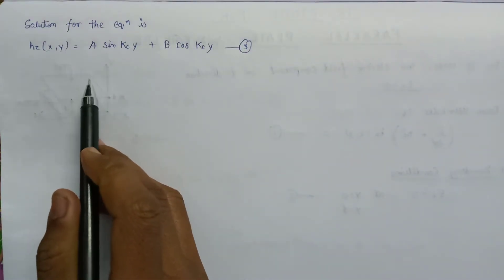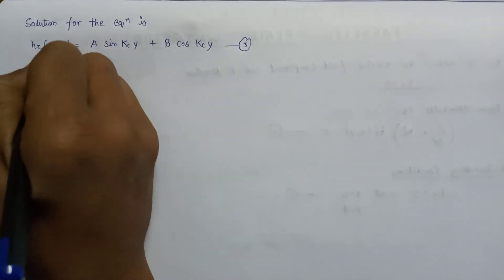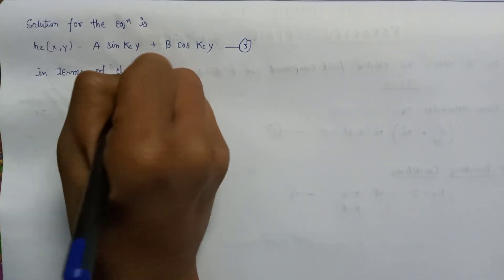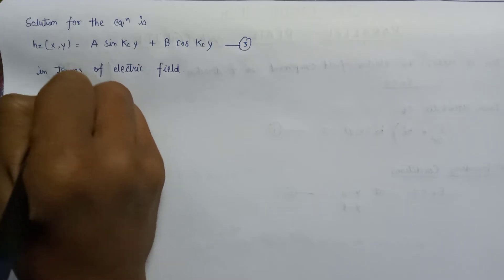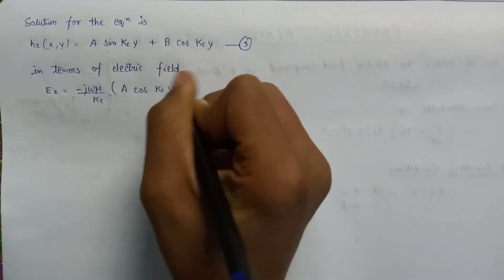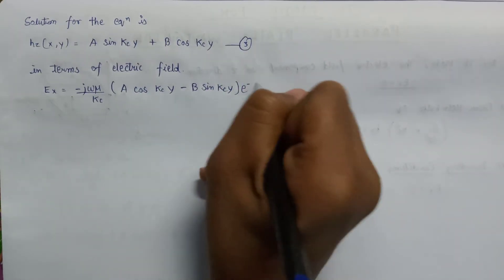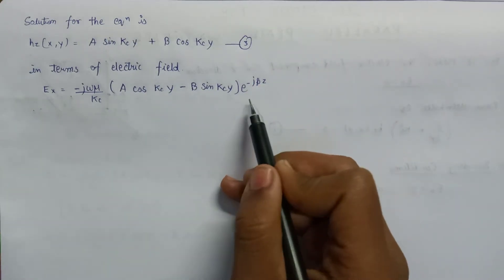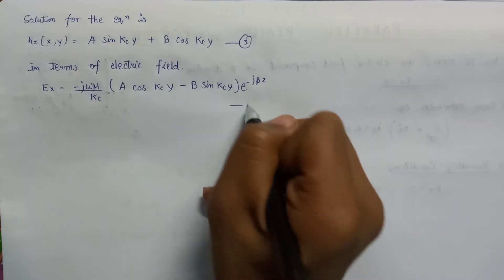If we express the solution of the Helmholtz equation in terms of the electric field, it can be written as: Ex equals (−jωμ/Kc) · A cos(Kc·y) minus (jωμ/Kc) · B sin(Kc·y), multiplied by e^(−jβz), where the term e^(−jβz) represents the propagation of the wave in the z-direction. This is equation number 4.